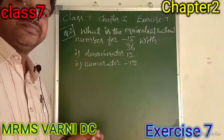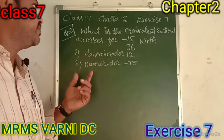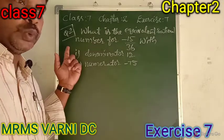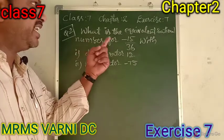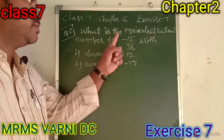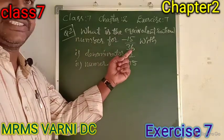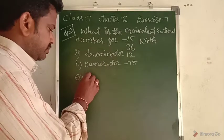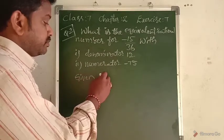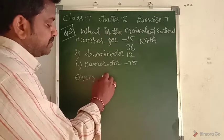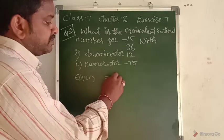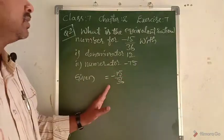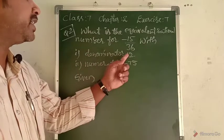Welcome. In this session we'll discuss Class 7, Chapter 2, Exercise 7, Question number 2: what is the equivalent rational number for minus 15 by 36? The given rational number is minus 15 by 36, and we need to find an equivalent with denominator 12.